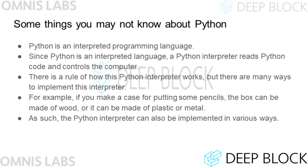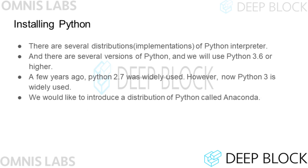In this lecture, we will explain Python's operating system-related libraries. If you're familiar with Python programming, you can skip this lecture. The Python programming language is an interpreter language, which works in such a way that a program called a Python interpreter creates Python code and manipulates the computer to do tasks. There are rules for how the Python interpreter works, but there are many ways to implement this interpreter program — it's like how a pencil case can be made of wood, plastic, or metal.